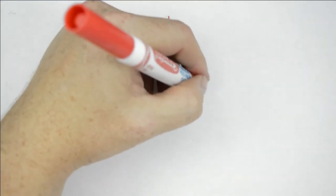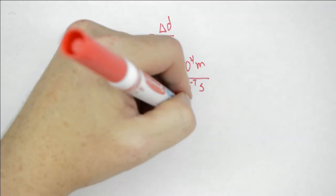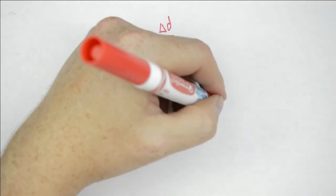what we end up with is a speed of 1.2 times 10 to the 10 meters per second. This is significantly faster than the speed of light.